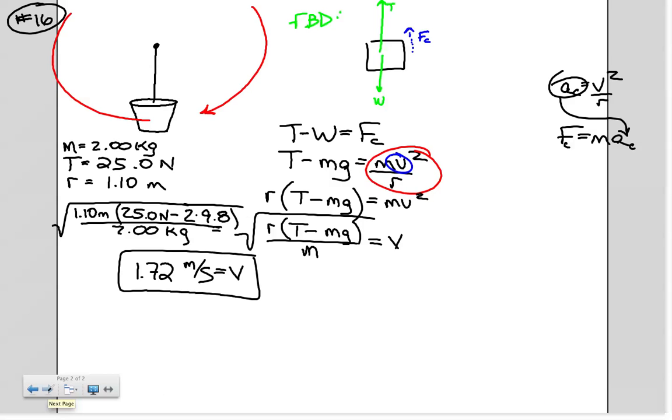Part B of the problem asks us to solve a slightly different portion of the same problem. I'll eliminate that stuff. Part B says how fast must the bucket move at the top of the circle so the rope does not go slack. So again, we'll draw a free body diagram. I'm not going to resketch the bucket moving in a circle.